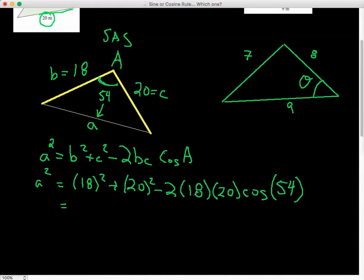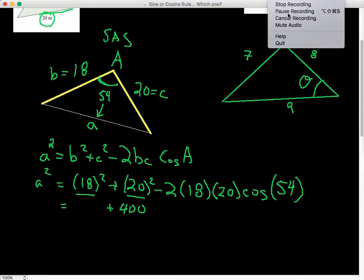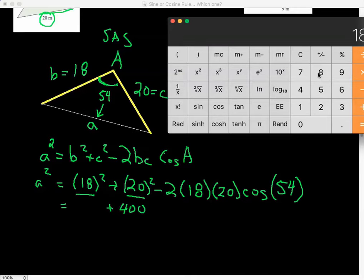Now, if you try and put this in your calculator all at once, usually you will make a mistake. So what I would do is I would take these two here and multiply them out and see what we get for our values. So we have 20 squared, which is 400, and our 18 squared is 324.